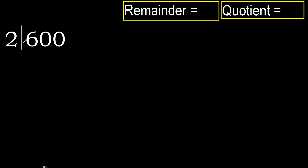600 divided by 2. 6 is not less, so with 6: 2 multiplied by which number is nearest to 6 but not greater? 2 multiplied by 4 is 8 — 8 is greater. Multiply by 3: 2 multiplied by 3 is 6. 6 is not greater. 6 minus 6 is 0.